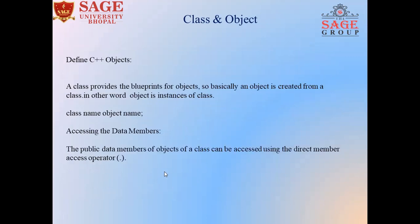Next, we are moving on to objects. A class provides the blueprint for objects. Basically, an object is created from a class. In other words, objects are instances of classes. The syntax for creating an object is: write the class name followed by the object name. Accessing the data members — the public data members of an object of a class can be accessed using the direct member access operator, that is, the dot operator.